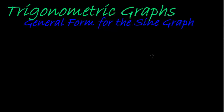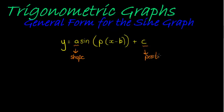Hi there and welcome back to our lesson on trigonometric graphs. We were looking at the general form for the sine graph: y equals a sine of p times the quantity x minus b, plus c. So far we've looked at a and c. We saw a was the shape, it determined part of the shape, and c determined part of the position. How? Well, a was the amplitude and c was the center line.